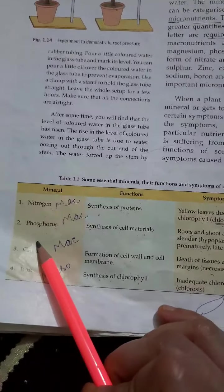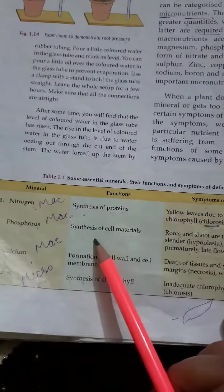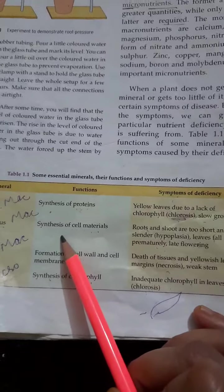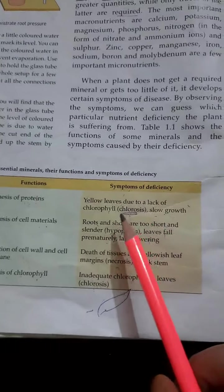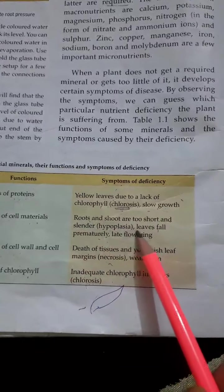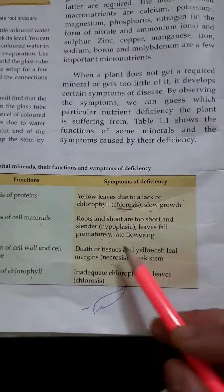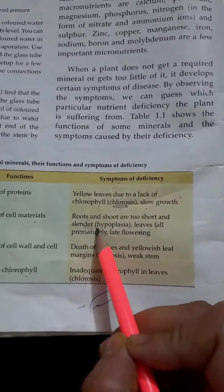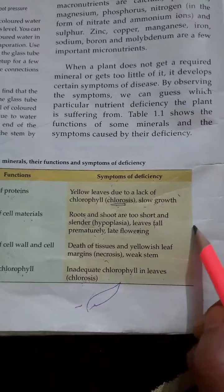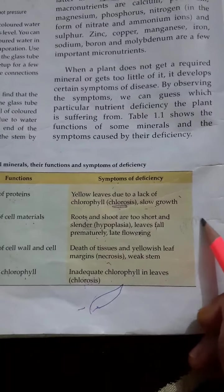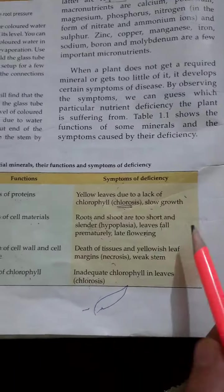Phosphorus, again a macronutrient, its function is synthesis of cell material. If it is deficient in plant, roots and shoots are too short. This condition is known as hypoplasia. You can see the leaves tilted like this, they cannot grow further. Leaves fall prematurely and late flowering of the plant.